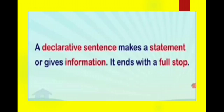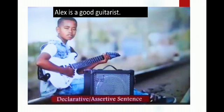The first one is assertive sentence. An assertive sentence is also known as a declarative sentence. A declarative sentence makes a statement or gives information. It ends with a full stop. The sentence which declares or asserts a statement, feeling, opinion, incident, event, history, or anything is called an assertive sentence. An assertive sentence can be either affirmative or negative. For example: Alex is a good guitarist. This sentence gives us a fact — Alex is our subject here, and this is a declarative or assertive sentence. Notice that it always ends with a full stop.